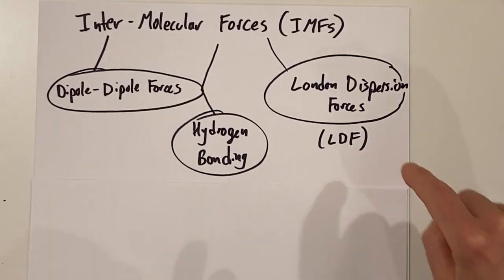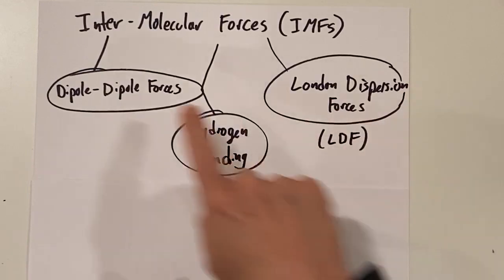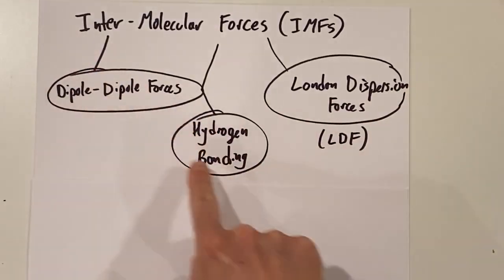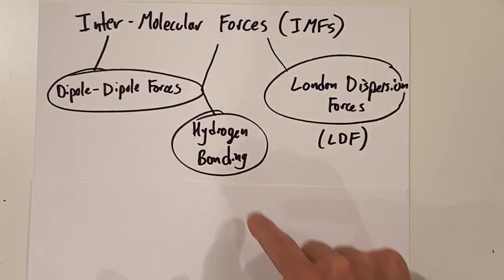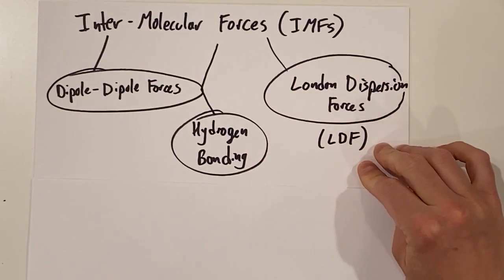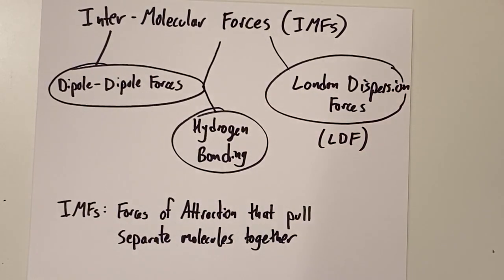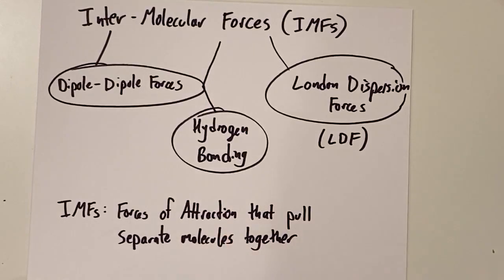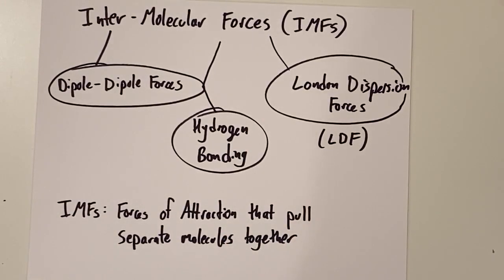In this video, we're going to focus on London dispersion forces, which is one of the three kinds of intermolecular forces, along with dipole-dipole forces and hydrogen bonding. Remember that all intermolecular forces, or IMFs, are forces of attraction that pull separate molecules together.